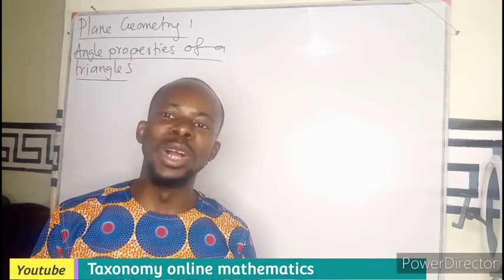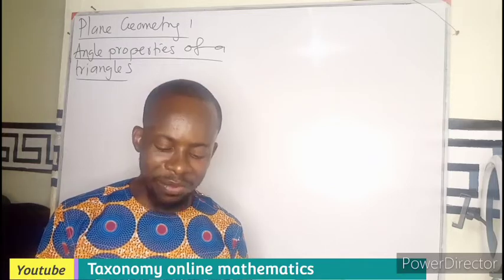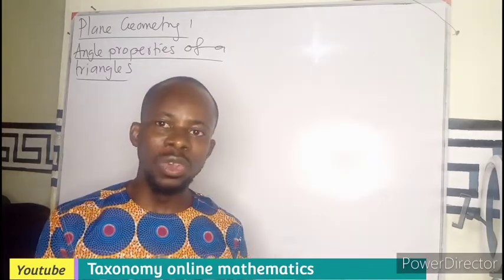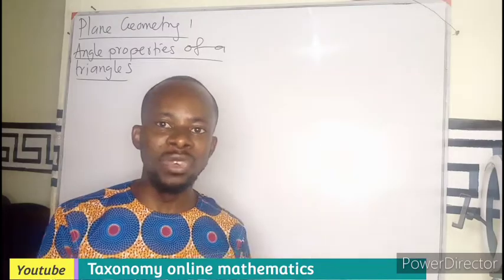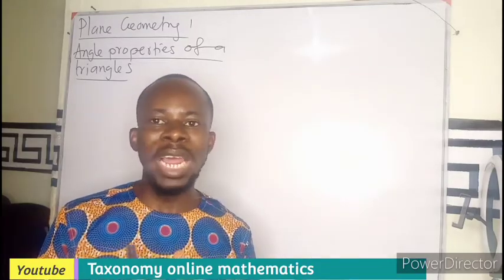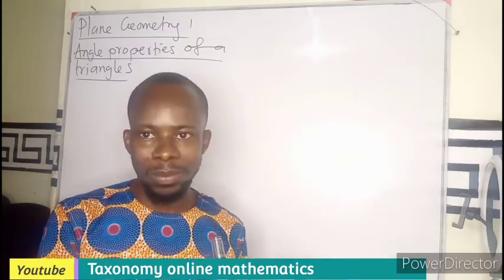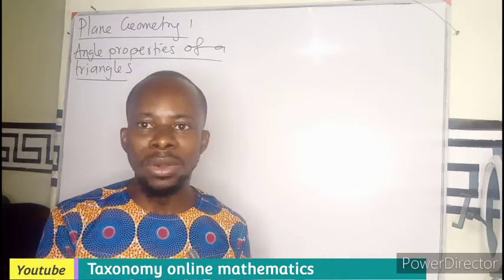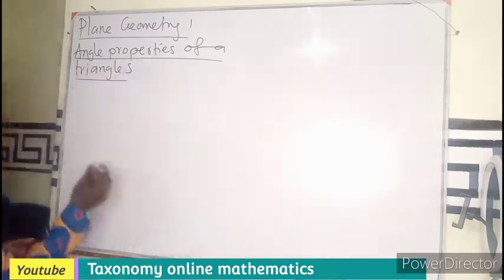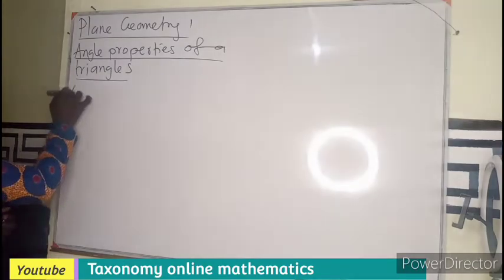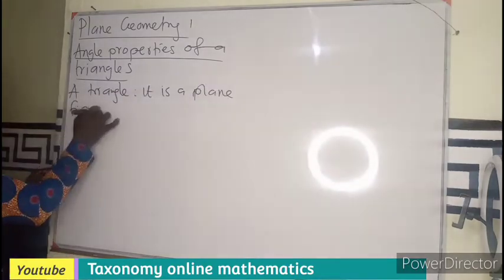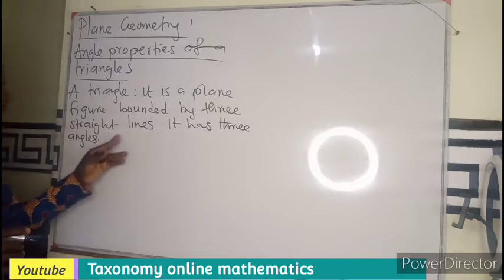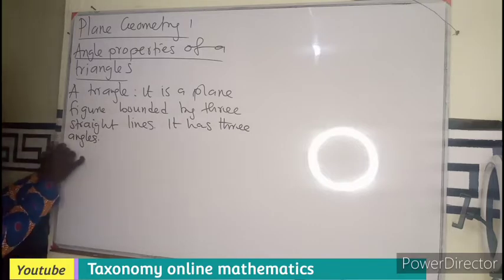Now for a triangle, we know that a triangle is a plane figure bounded by three straight sides or three straight lines, which is made up of three angles. And there are various types of triangles.